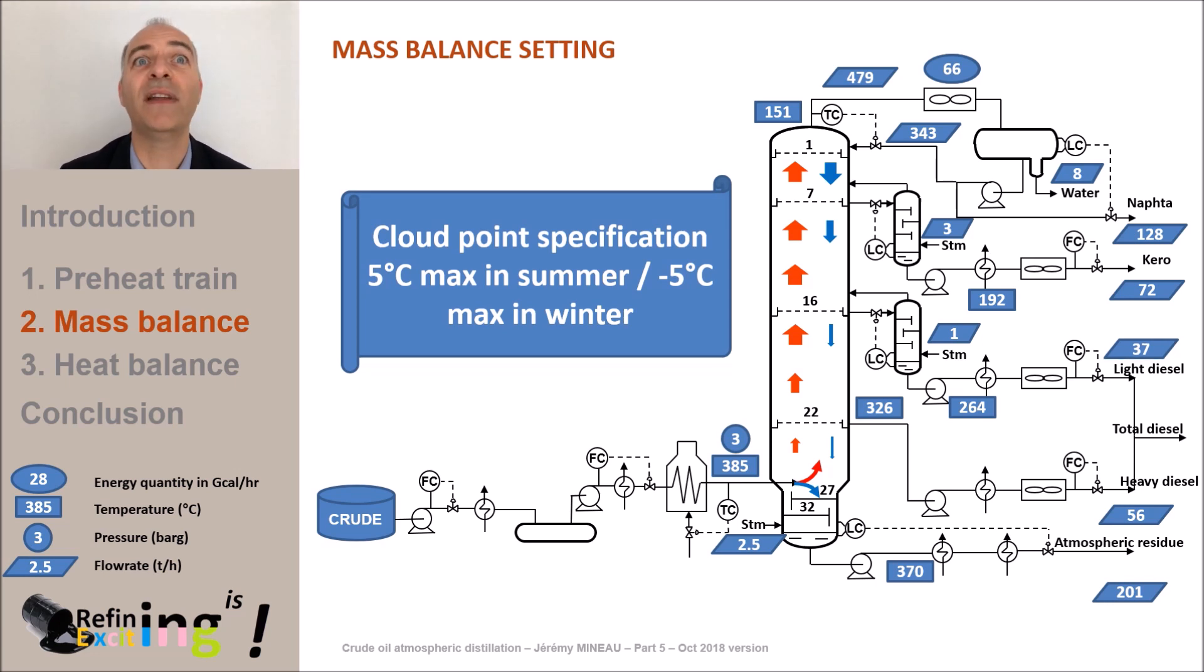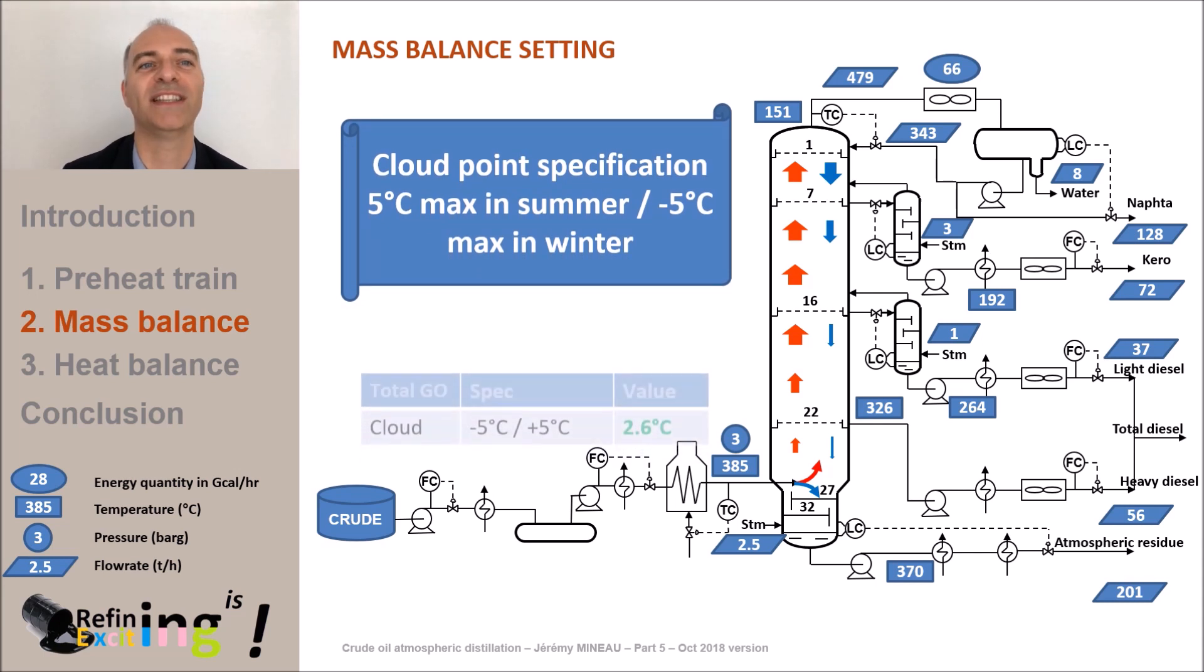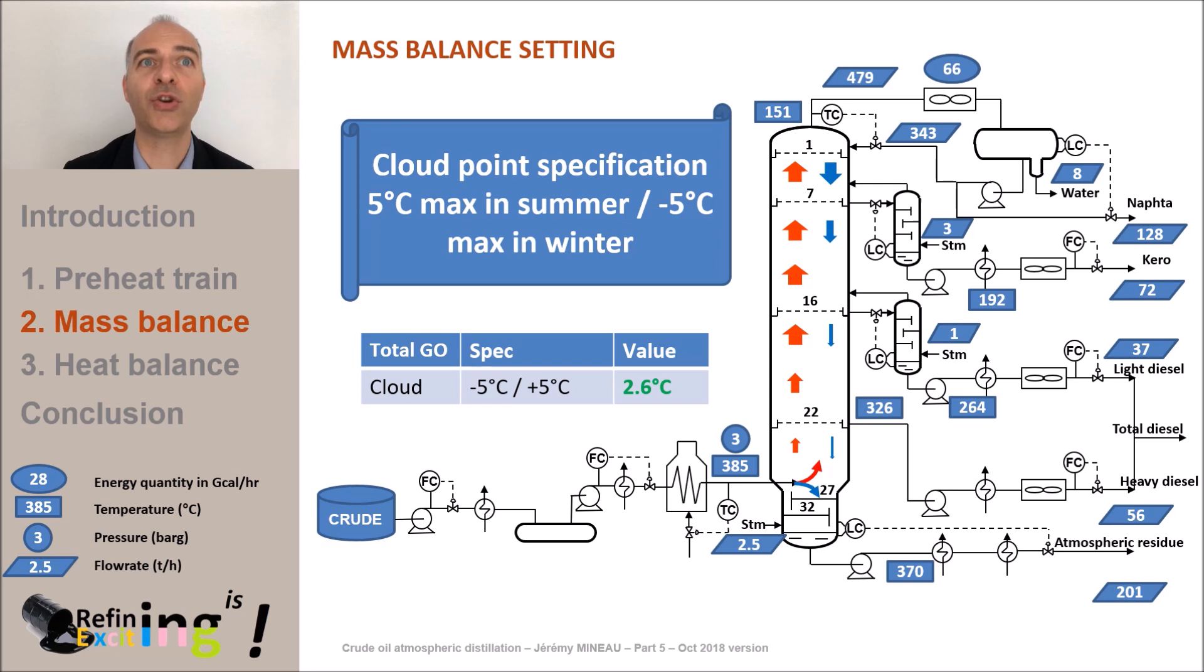In our current case, we see that the cloud point of the light plus heavy diesel mixture is 2.6 degrees C. In this example, we will consider that we are in summer season. Then, we see that the amount of diesel could be increased to aim for 5 degrees C. But, as a first approach, I propose you to keep this value and then consider a margin.